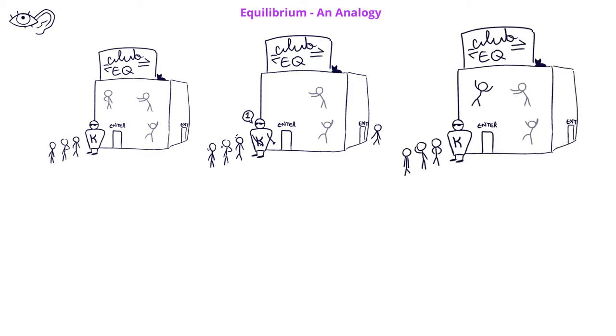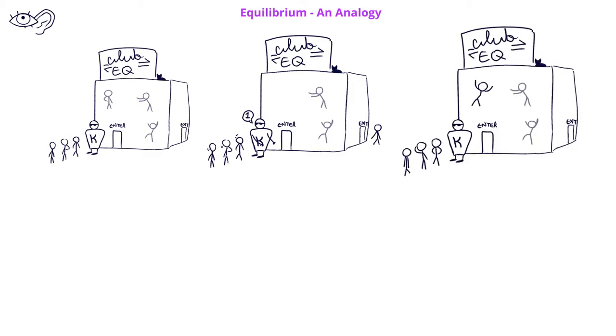In this third frame, we see that we've established equilibrium once again because we still have the same concentration inside the club that we did initially, and we still have the same concentration or the same number of people outside the club as we did in the initial cartoon frame.